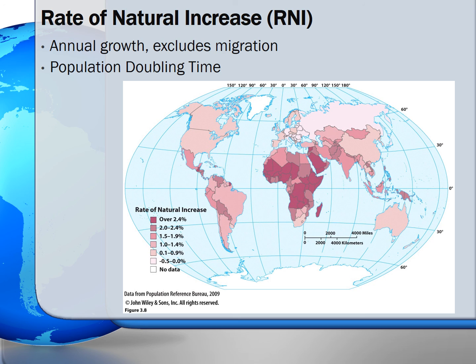For example, in 2012, the birth rate for the world was 20 per 1,000 and the death rate was 8 per 1,000. The difference is 12 per 1,000, which, when converted to a percentage, yields a rate of natural increase of 1.2%. A rate of zero means that the population is neither declining nor growing, and a negative number indicates the population is declining.